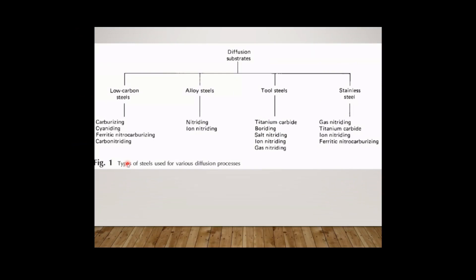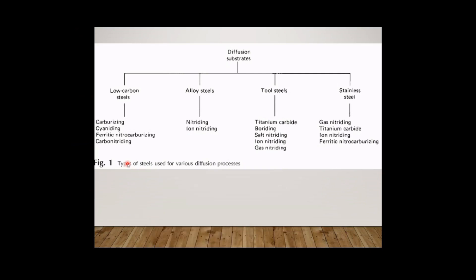Mainly low carbon steels are subjected to case hardening by carburizing, cyaniding, ferritic nitrocarburizing, and carbonitriding. Alloy steels are subjected to nitriding and iron nitriding. Tool steels are subjected to titanium carbide, boronizing, salt nitriding, iron nitriding, and gas nitriding. Stainless steel is mainly subjected to gas nitriding, titanium carbide, iron nitriding, and ferritic nitrocarburizing. These are all the different case hardening processes applied to different types of steels.